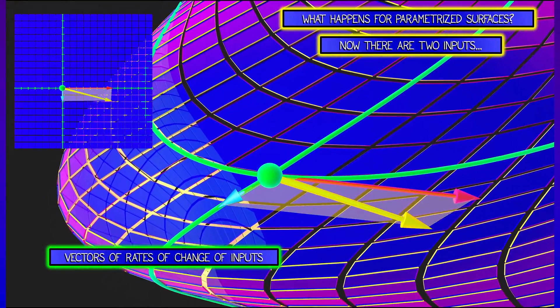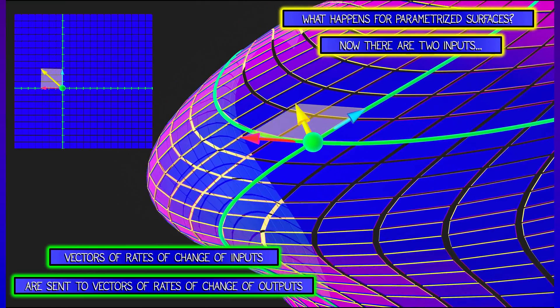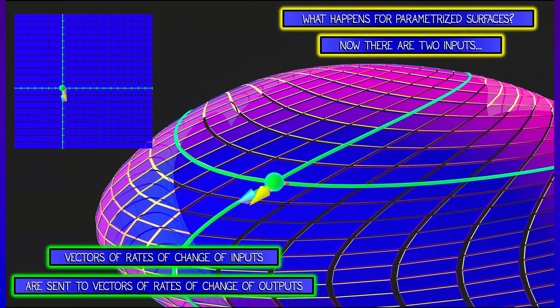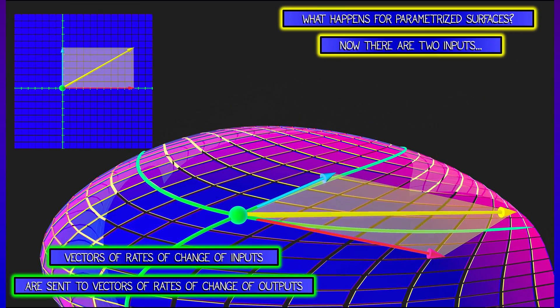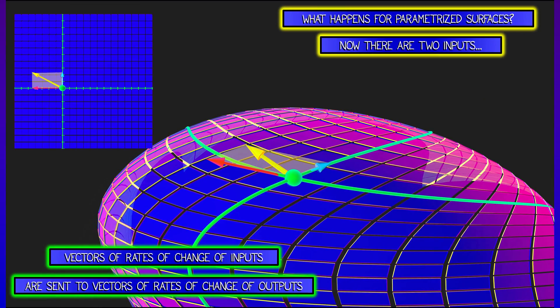What happens if I'm changing the inputs at any arbitrary set of rates? Well, that's a vector, and I can use vector addition to represent that. And the derivative becomes a linear transformation that takes the vector of rates of change of inputs to a vector of rates of change of outputs.